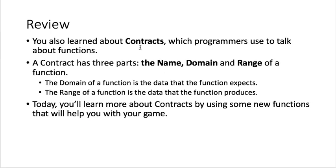We also talked about contracts, which programmers use to talk about functions. A contract has three parts: the name of the function, the domain (the data the function expects to take in), and the range (the type of data the function produces). Today we'll keep talking about contracts and use some new functions that will help with your game.